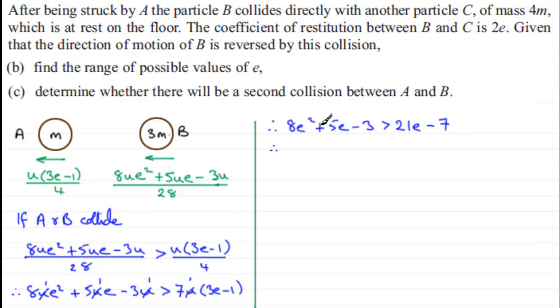We need to bring everything over to the left hand side. So we're going to get 8e squared. And then if we subtract 21e from both sides, take it away from the 5e, you're going to get minus 16e. And then add 7 to both sides. Minus 3, add 7, gives us 4. And this is going to be greater than 0.